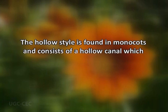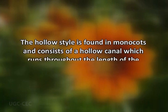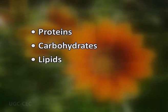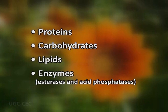The hollow style is predominantly found in monocots and consists of a hollow canal which runs throughout the length of the style from stigma to its base. A layer of glandular cells surrounds the stylar canal which secretes some mucilaginous substances into the canal, which serve as nutrition for the growing pollen tube. These secretions contain proteins, carbohydrates, lipids, and some enzymes such as esterases and acid phosphatases.